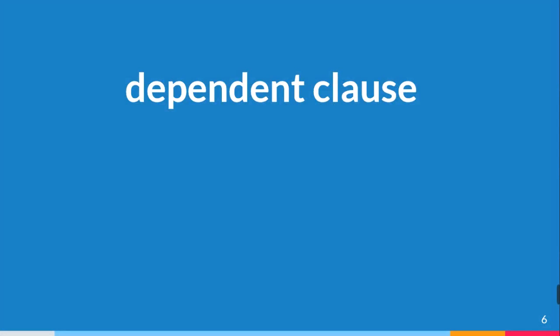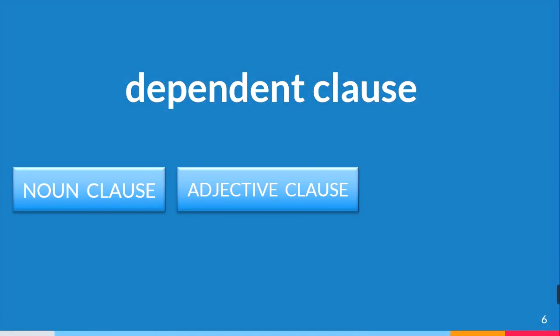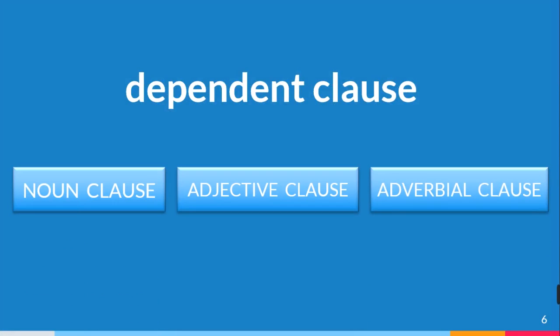From this explanation of dependent clause, we will talk more about noun clause, adjective clause, and adverbial clause. These three clauses are categories of dependent clause that will be discussed further in the next video.